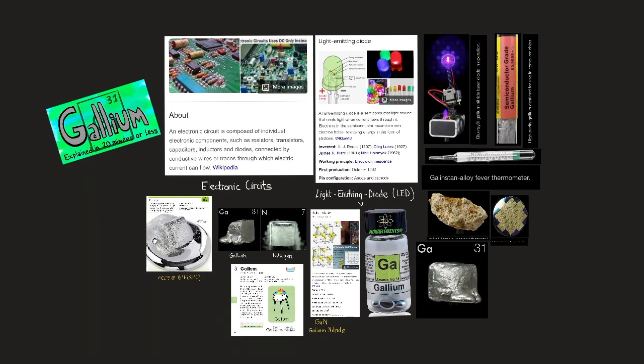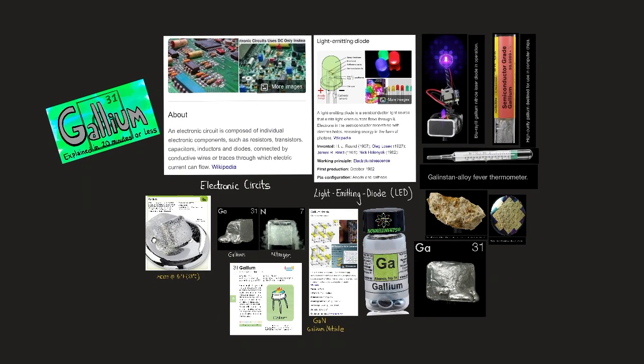Hello everyone, today I want to talk about gallium and its uses today. Gallium is used in electronic circuits, semiconductors, and light-emitting diodes, LEDs. It's used for high-temperature thermometers, barometers, pharmaceutical, and nuclear medicine tests.